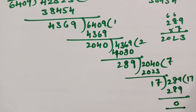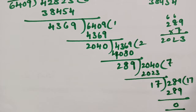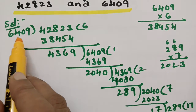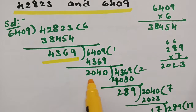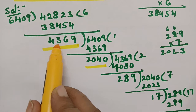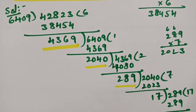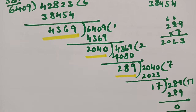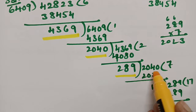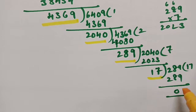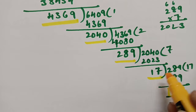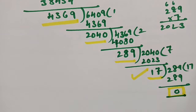As taught in yesterday's video on the division algorithm, these are all the remainders. If I divide the bigger number by the smaller number 6 times, we get a remainder. After bringing each result down and dividing again, we get successive remainders. We continue this until we get 0 as the final remainder. The last non-zero remainder will be the GCD. So the GCD of the given numbers is 289.